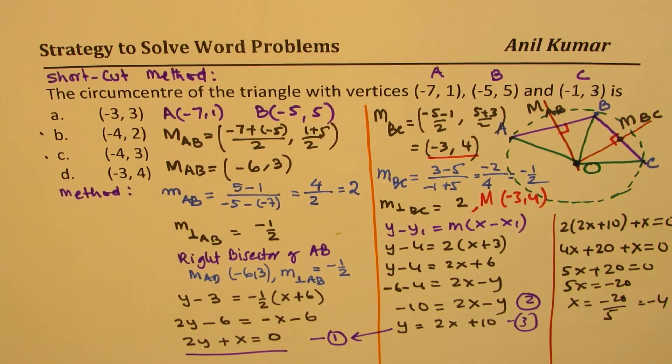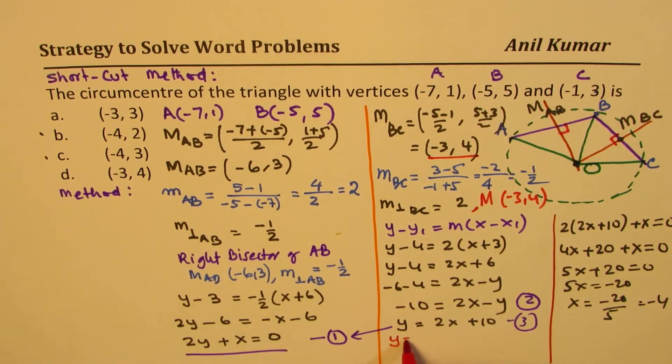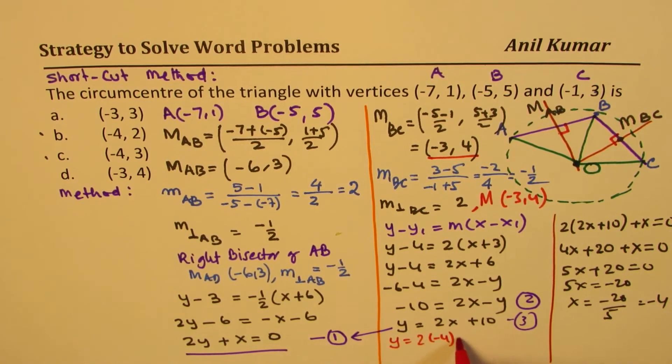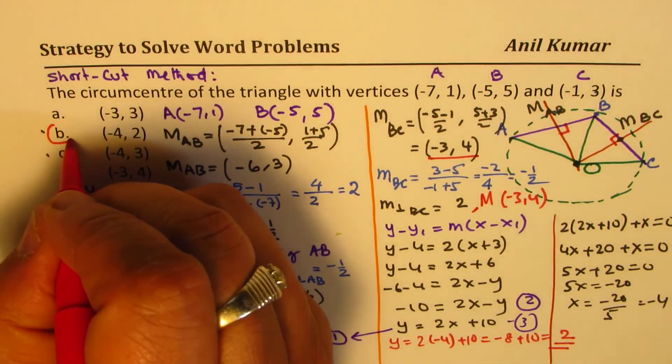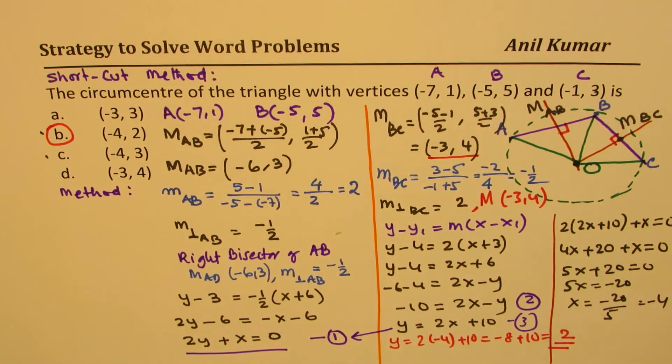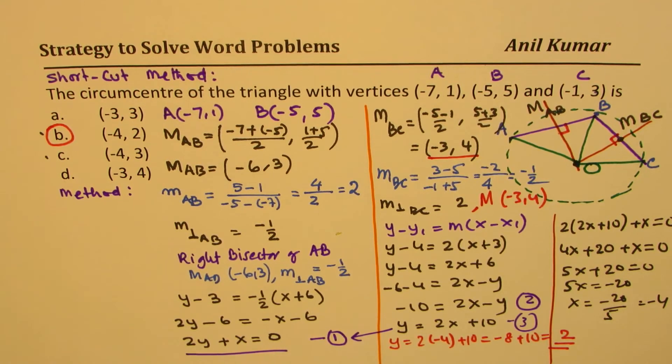So x is -4 for us. We can substitute x as -4 in this equation. So we get y equals to 2 times -4 plus 10. So that is -8 + 10, which gives us 2. So we get b as the right answer. So b is the right answer for us.